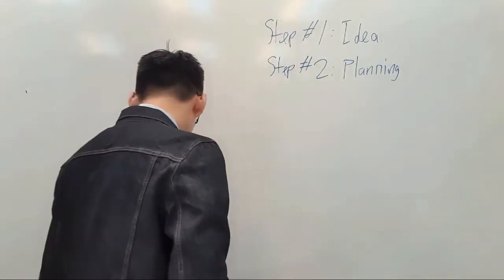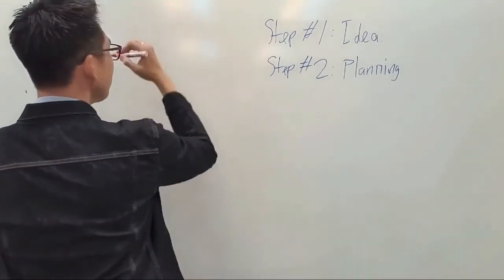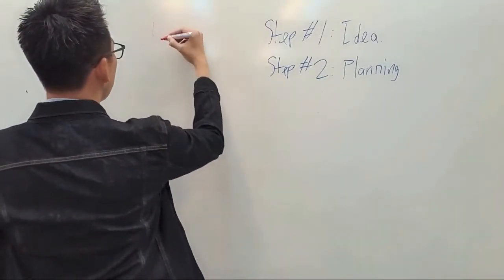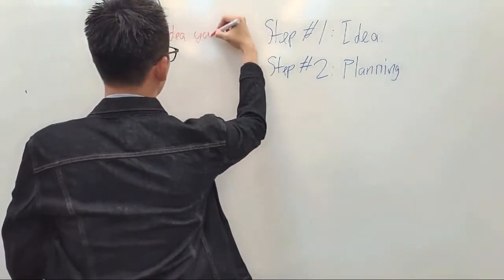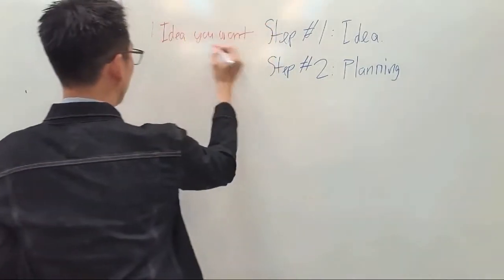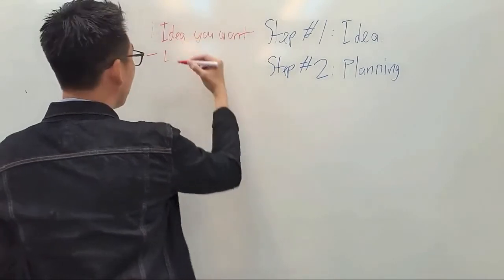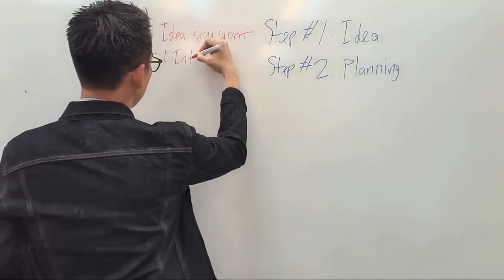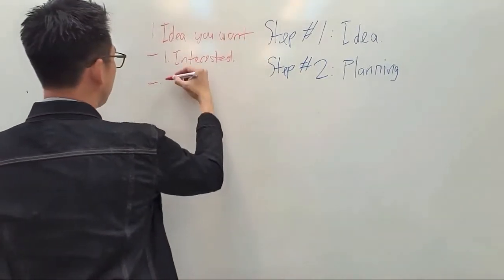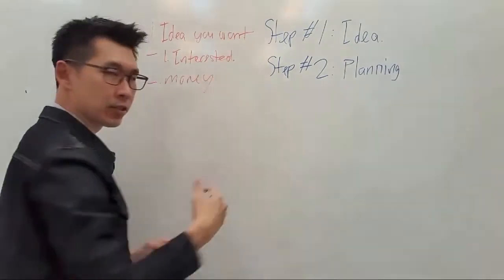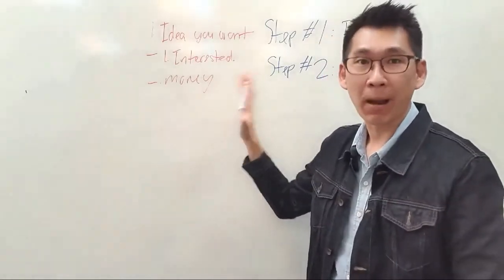So let's write it down on the whiteboard. In terms of planning, the first thing is that you need to decide which idea you want. To know which idea you want: first, is it something that makes you excited — something you're interested in? The next point is the money you can make, because you are doing this for business, so this has to be a priority.